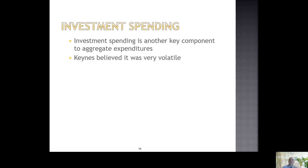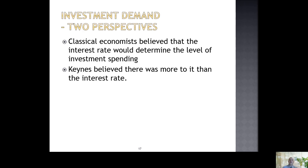Keynes also focused on another key component of what drives the business cycle: investment spending, which is what businesses are doing. Keynes believed that investments were extremely volatile and that we couldn't really stabilize our understanding of what businesses would actually do. The classical economists believed that the interest rate determined the level of investment in a straightforward way: as interest rates rise, investment activity goes down, because if it becomes too expensive to take out a loan to build a factory, businesses won't build it. As interest rates go down, businesses take out loans and build new factories.